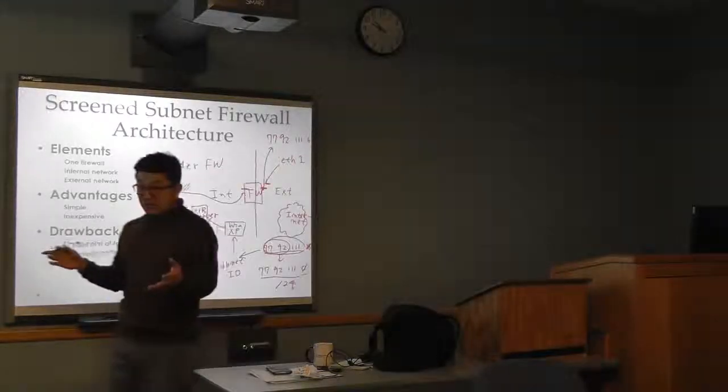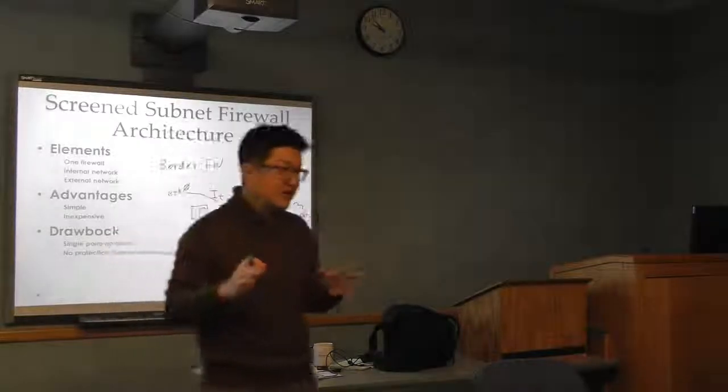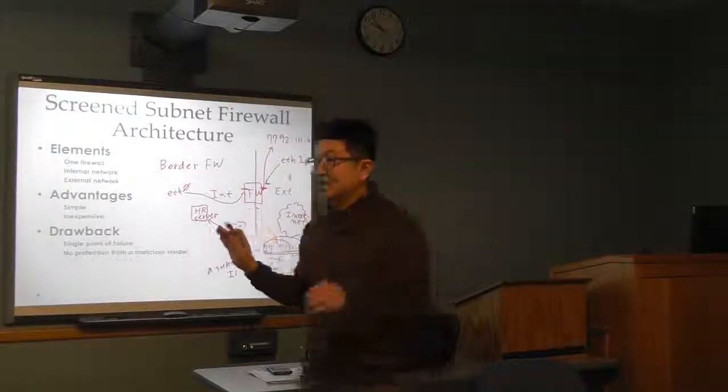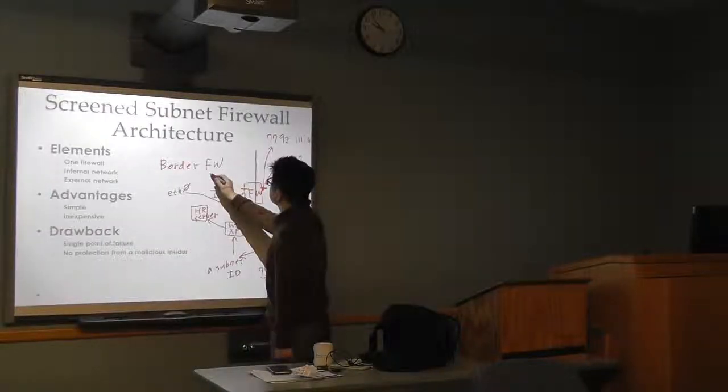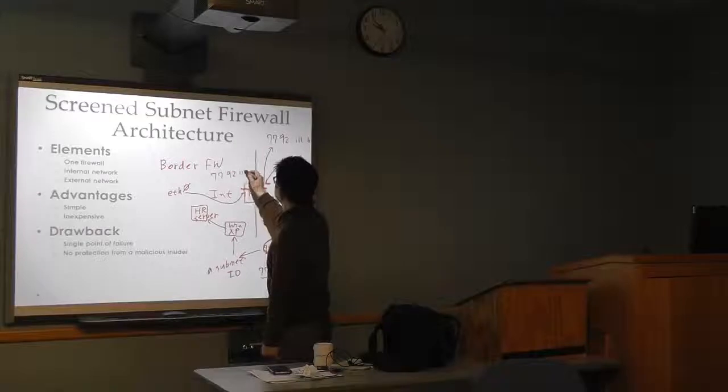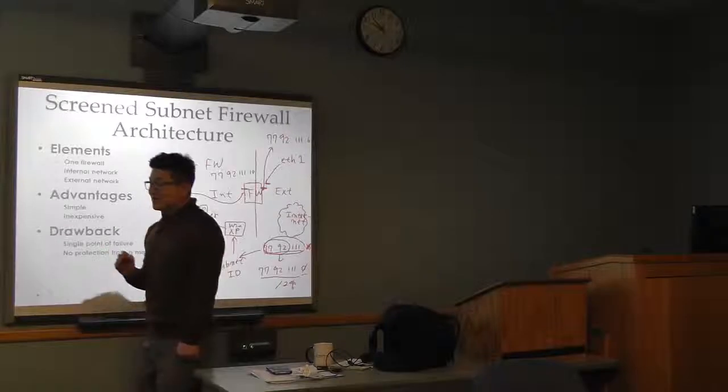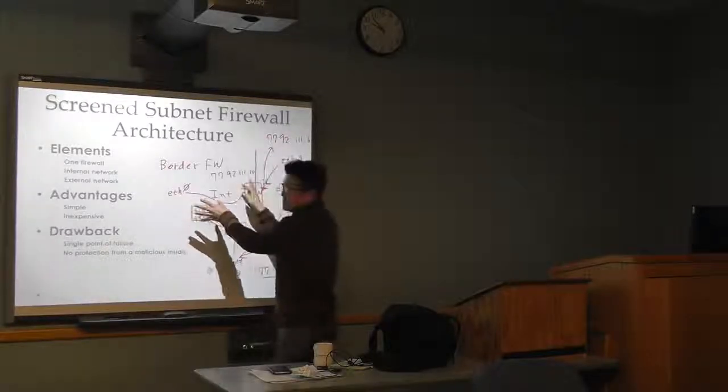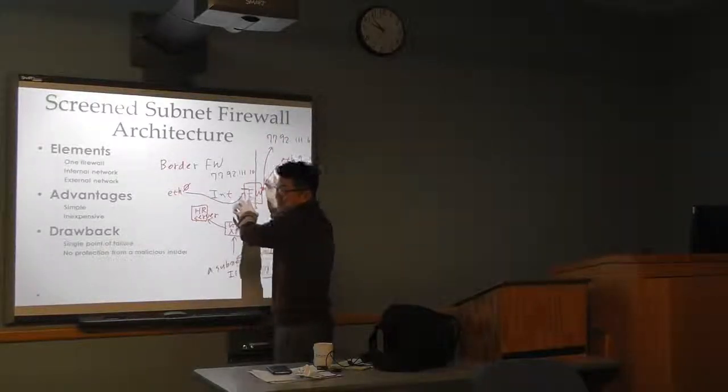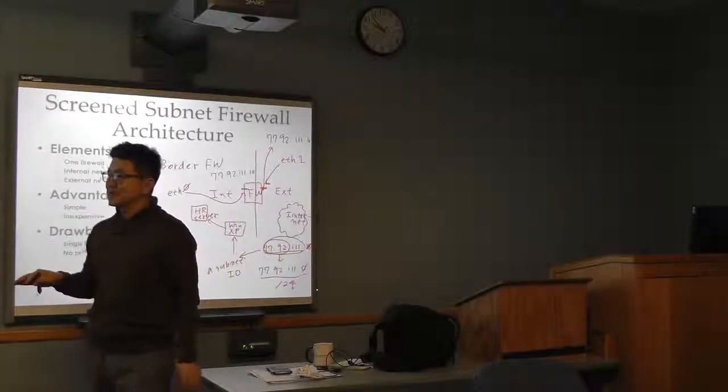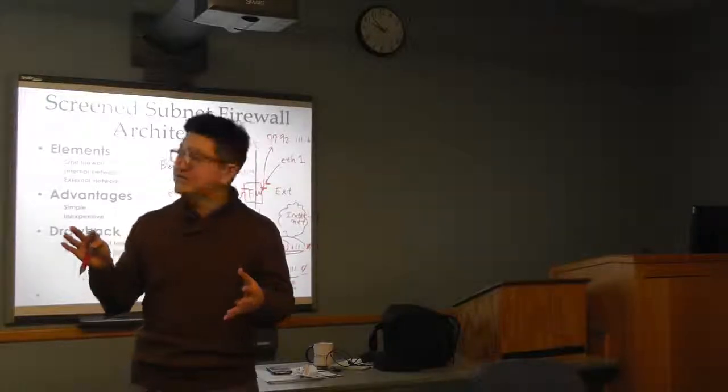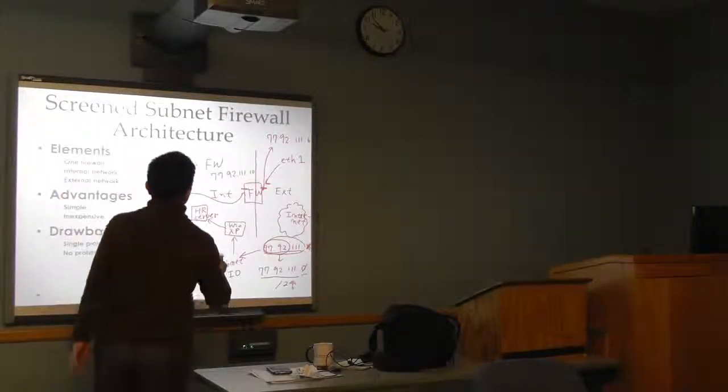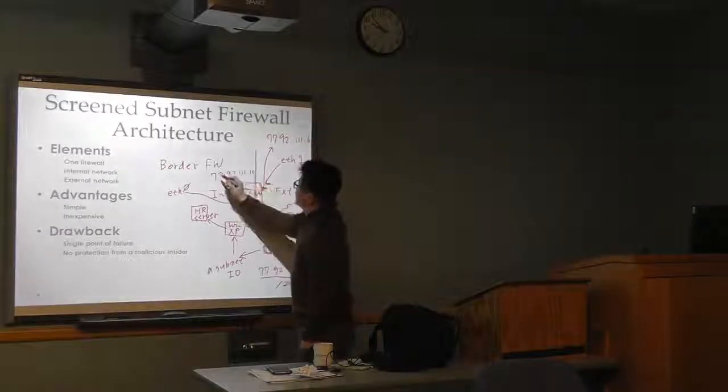But you have another interface here, and this has to belong to another subnet, because the main role of the firewall was what? To divide your network into two different things. If you have the same subnet here, if you assign something like 77.92.111.10 or something, that's a bad idea because this part of your network still belongs to the same subnet. You don't want to do that. That's not what the firewall is doing. You have to isolate your own network, your protected network, from the external network. So that's why you don't want to do this.